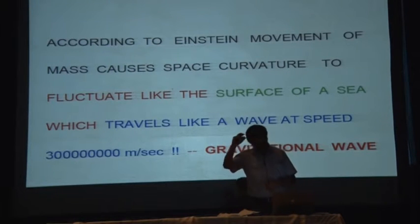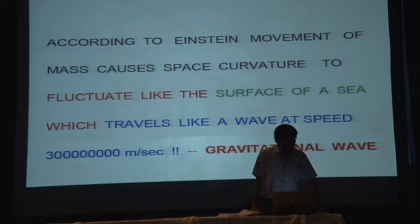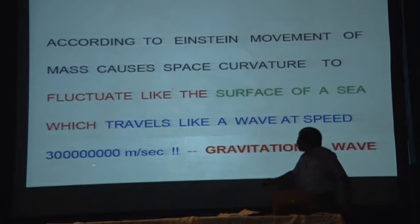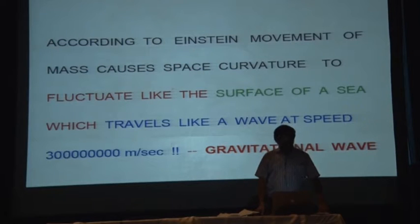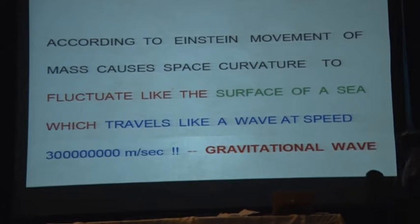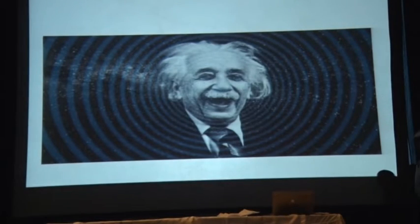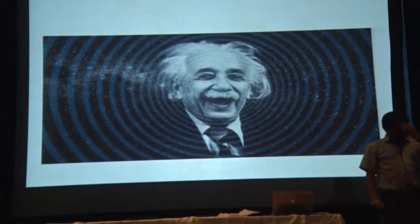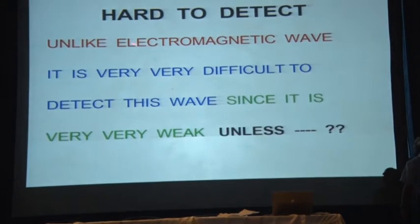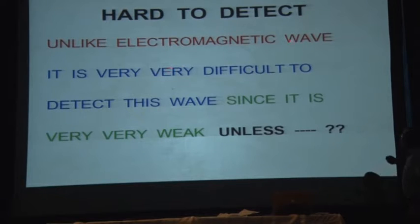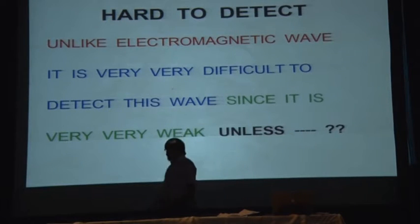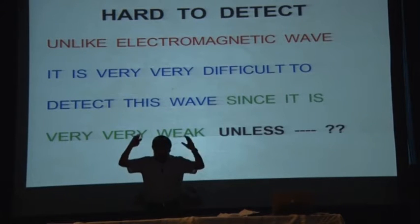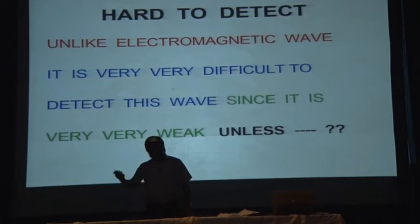A theory so successful in other predictions was predicting this — yet it was not detected. Gravitational waves are very hard to detect. Unlike electromagnetic waves, it is very difficult to detect this wave because gravity is a very, very weak force. Unless you can produce a huge, violent movement of space-time so that the gravitational wave amplitude is large, it is not possible to detect. If I move this laser pointer, it produces a wave, yes — but that wave amplitude is terribly small, impossible to detect.